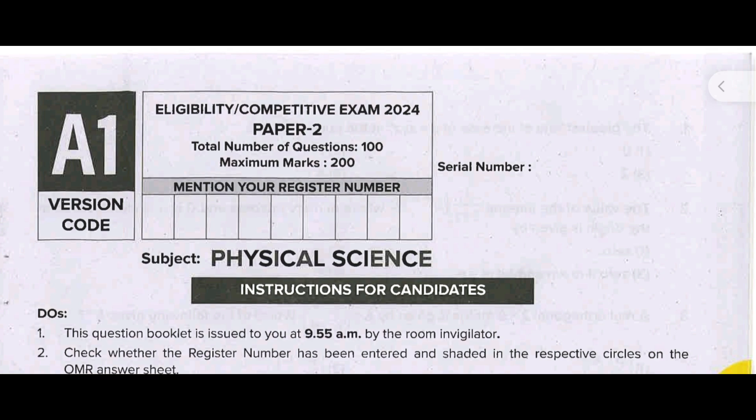Today the physical science previous year question paper with key answers - I am referring the K-SET 2024 physical science exam question paper and I will explain the key answers for this question paper. The question paper version code is A1.